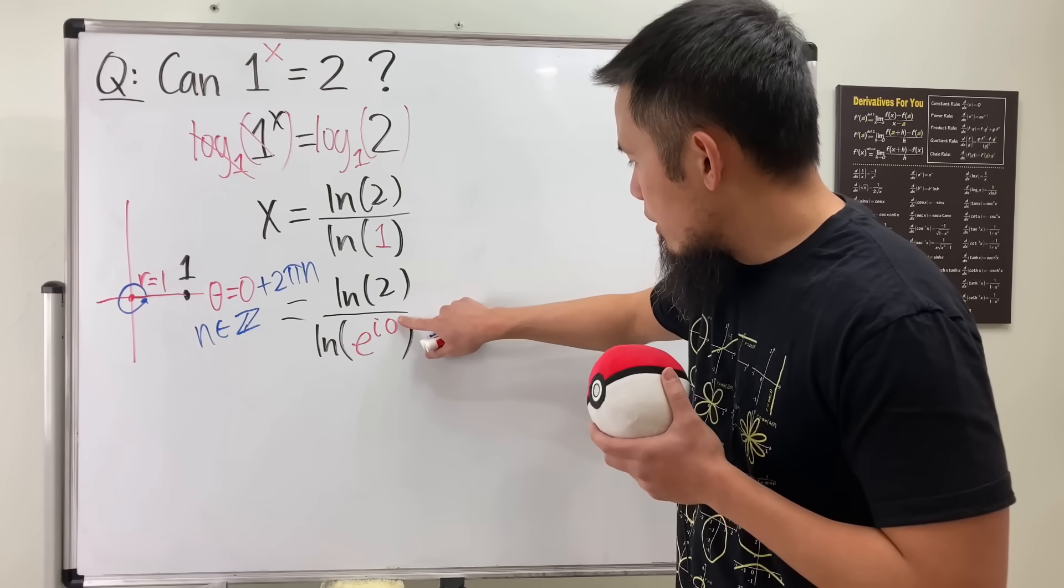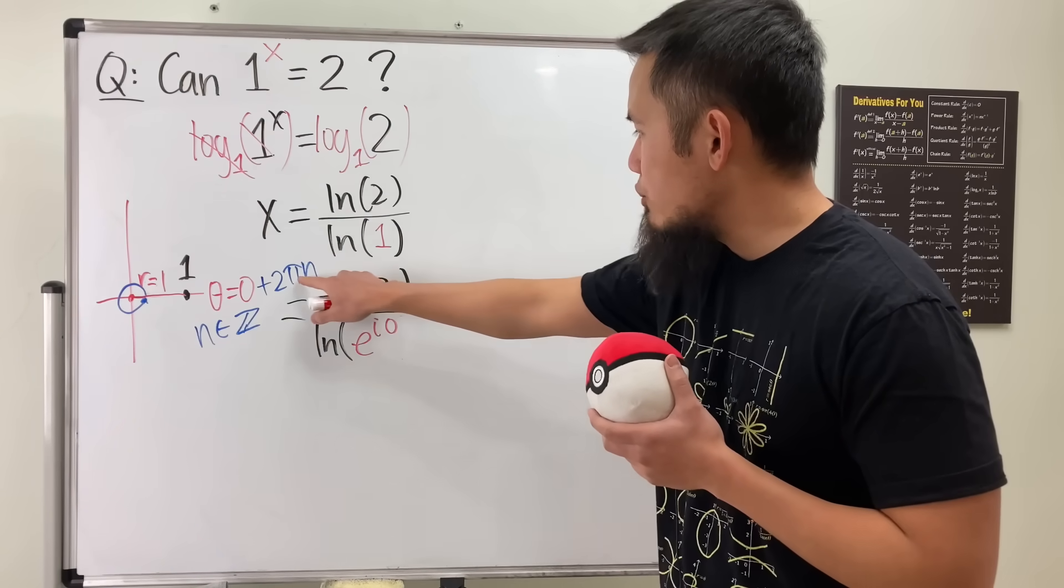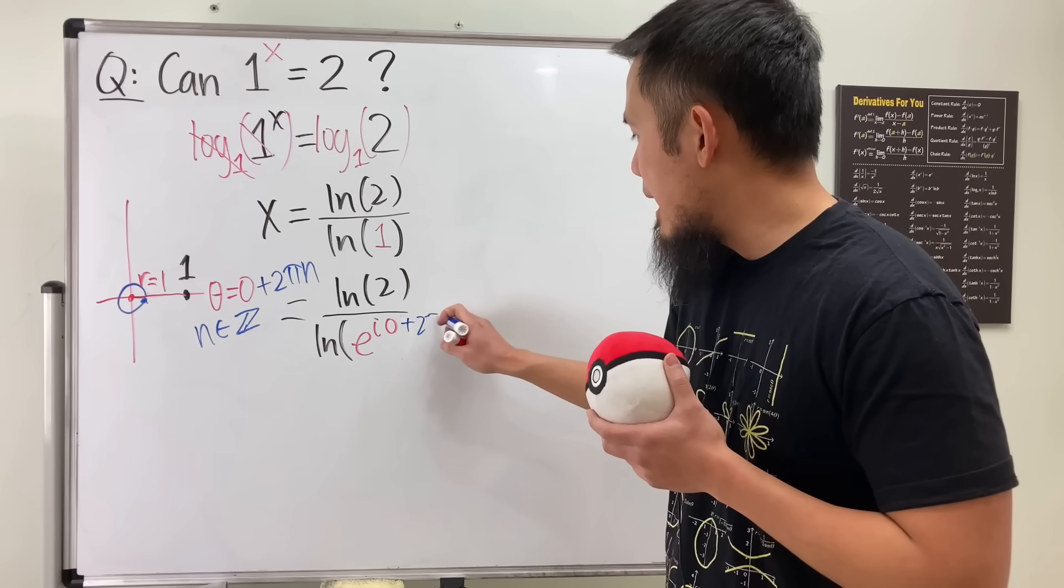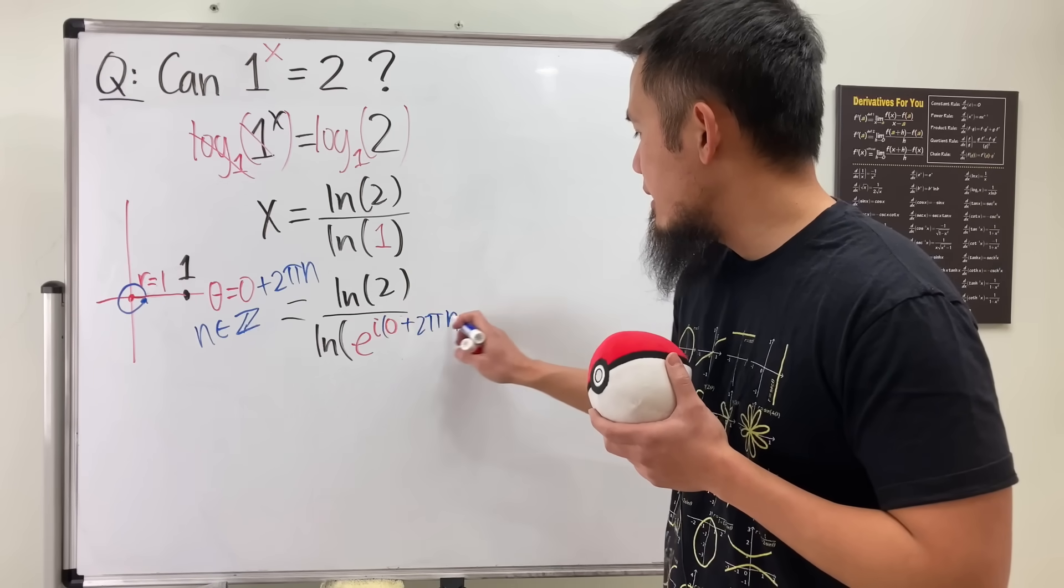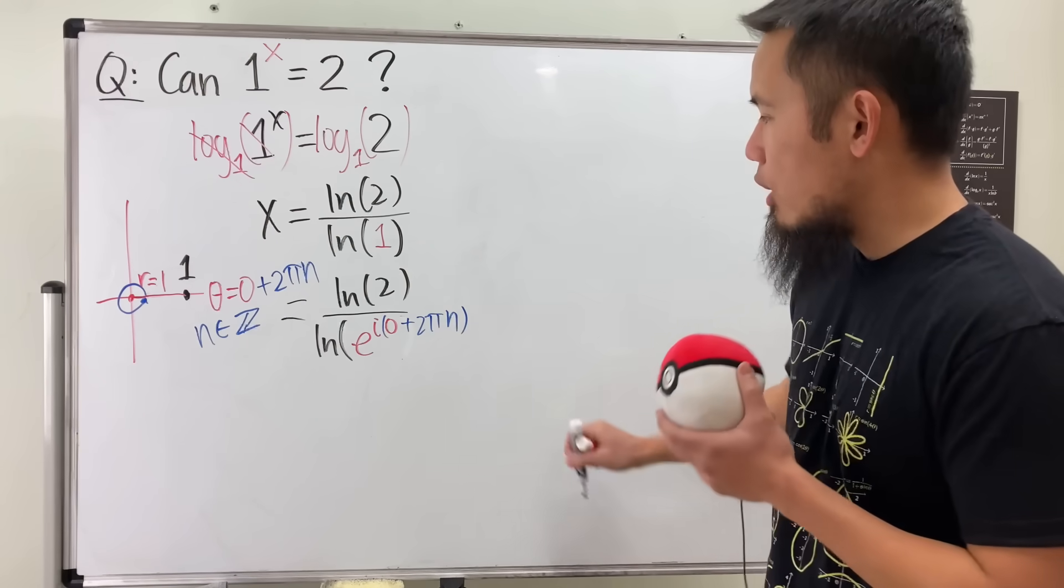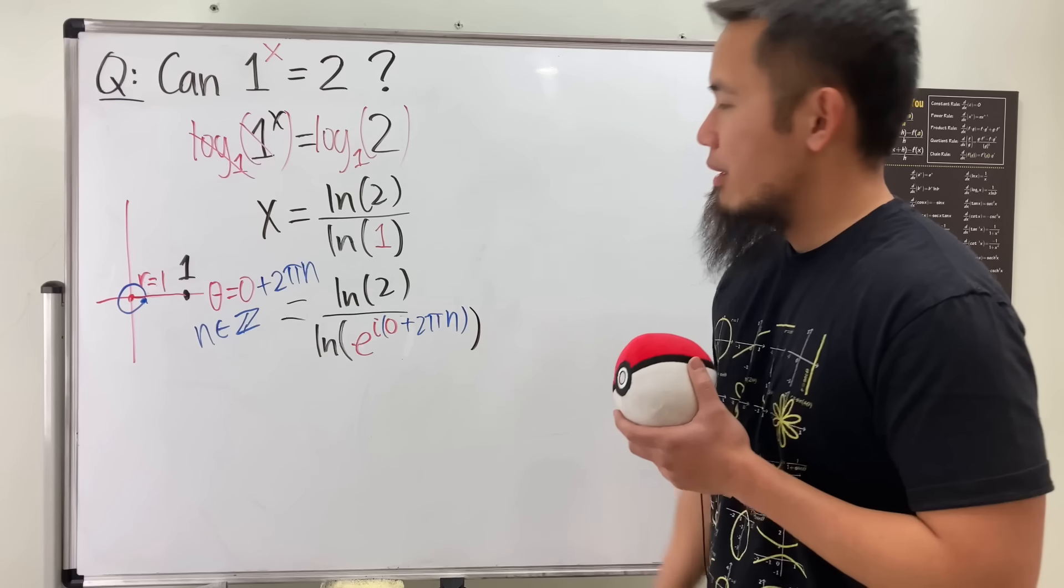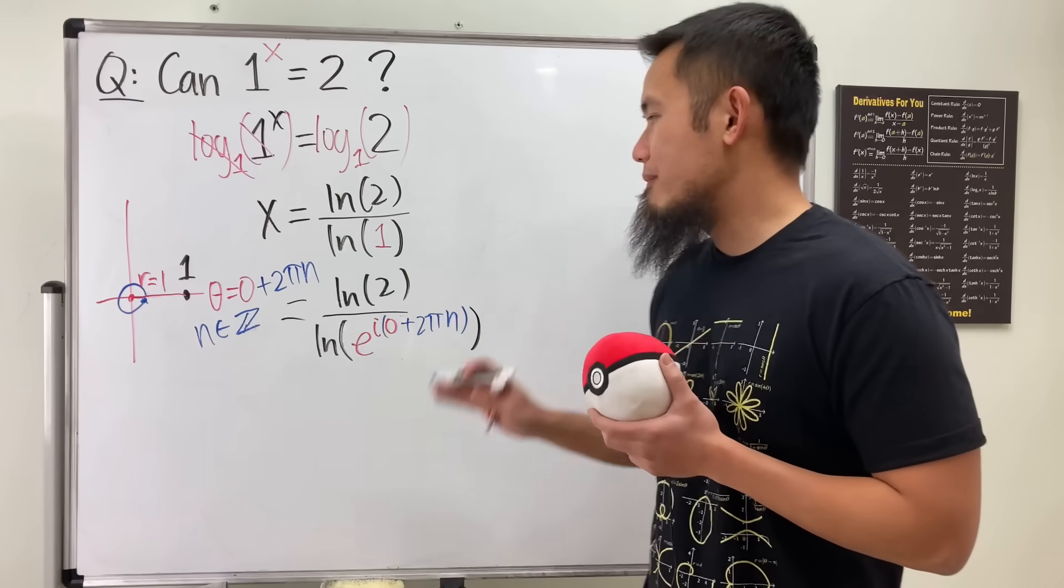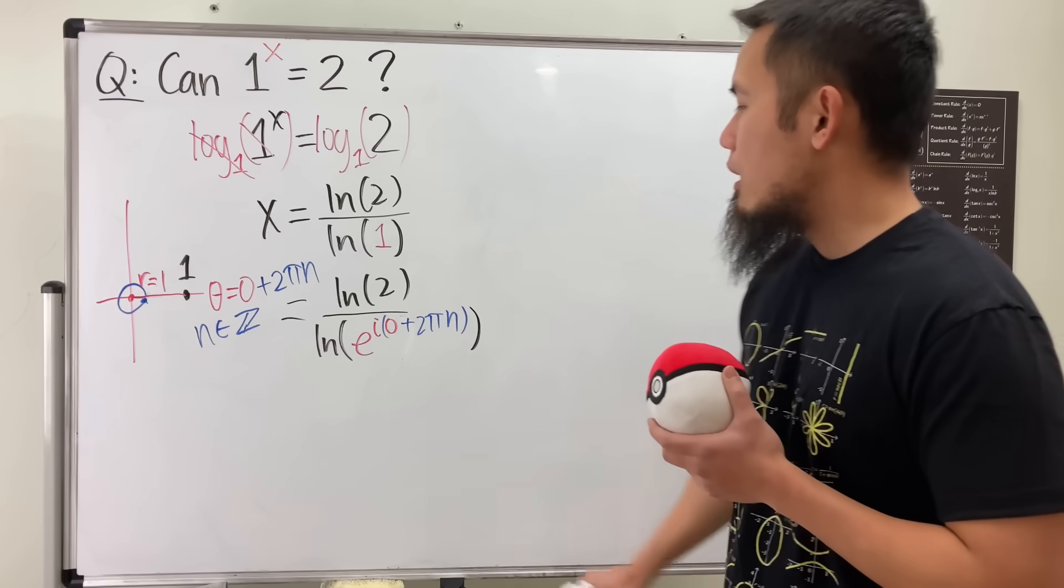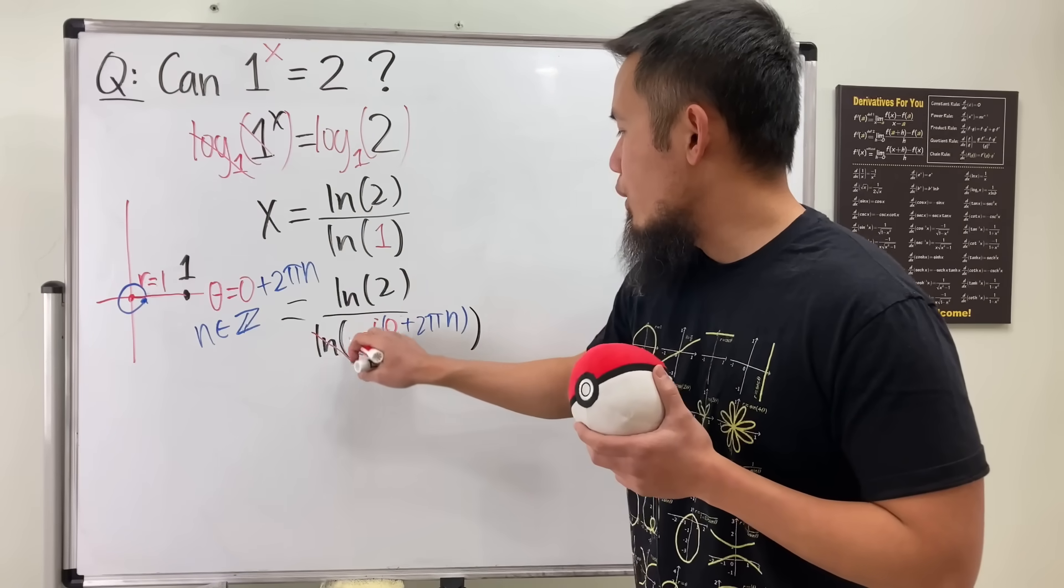So we'll just add 2π·n, where n is just an integer. It can be a positive or negative whole number. So we will actually have to attach that right here as well. So I will just add 2π·n. Right? That's actually our theta. We have to look at all of these values because we have multi-value for this situation.